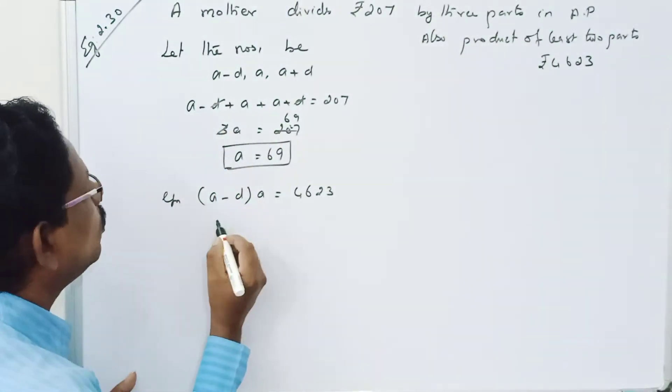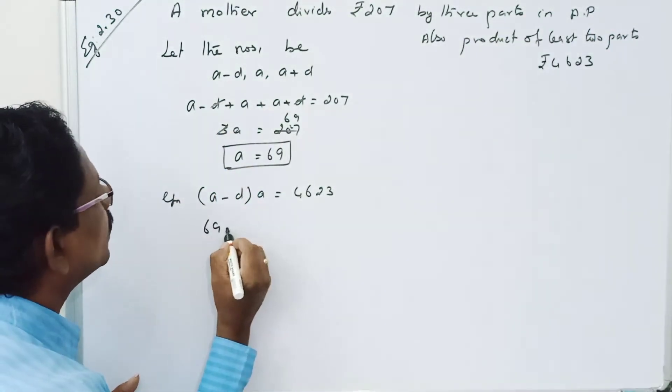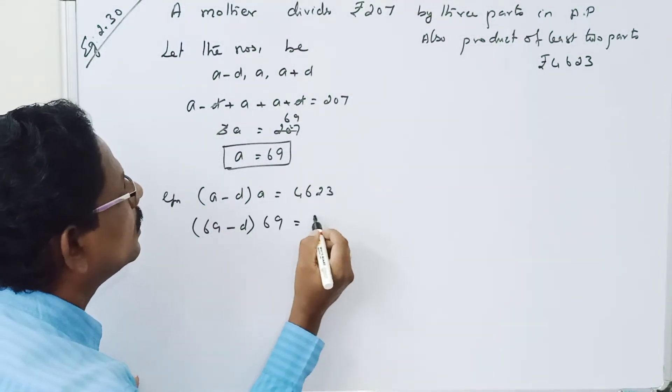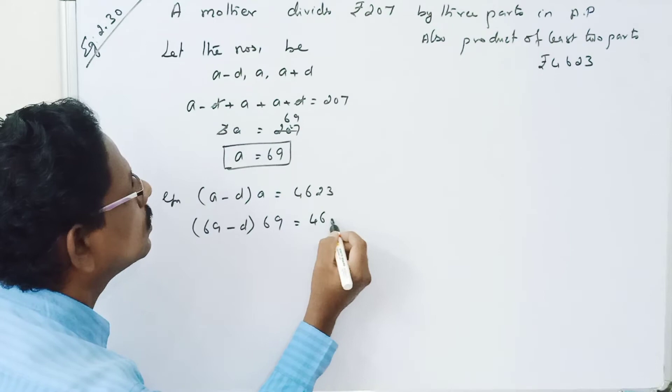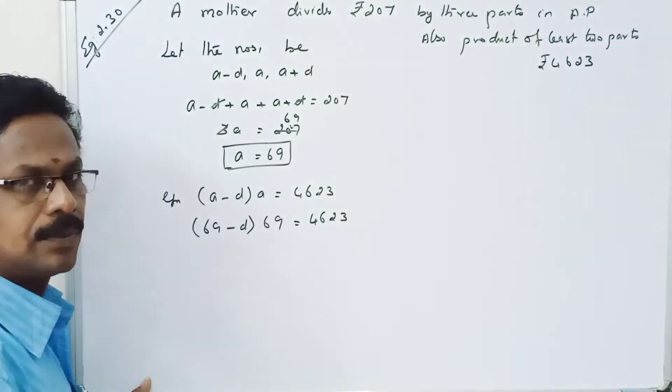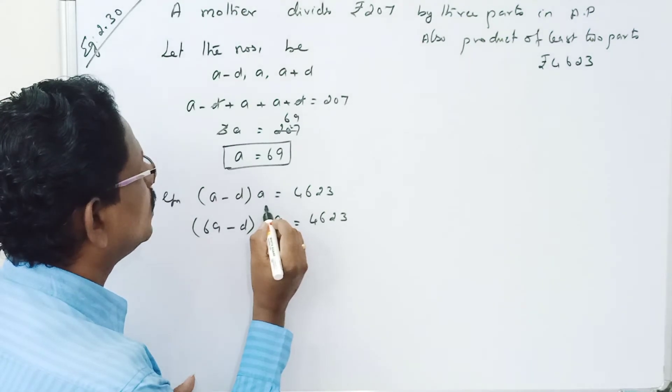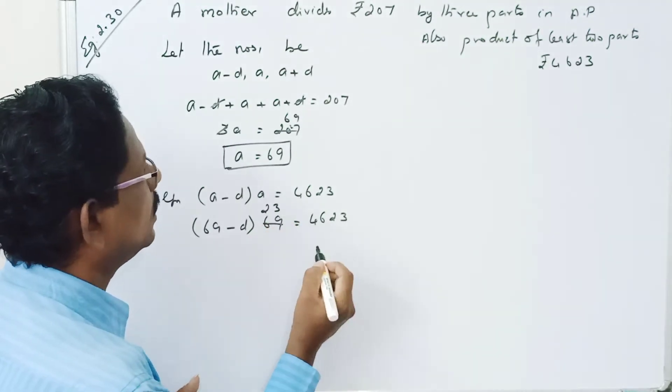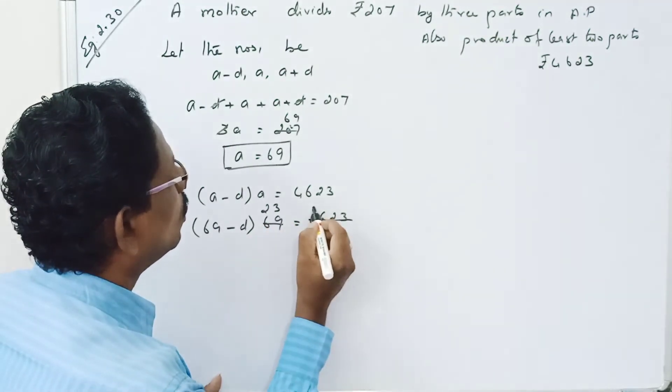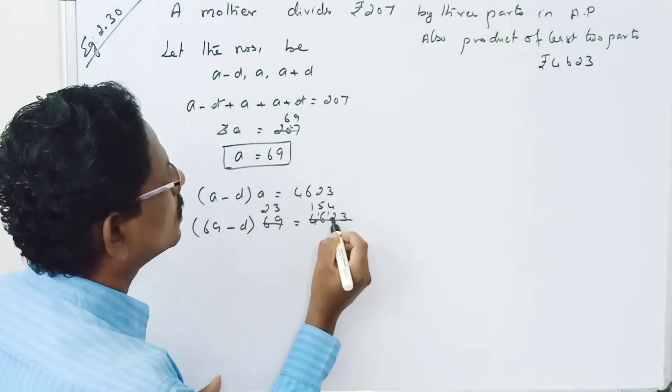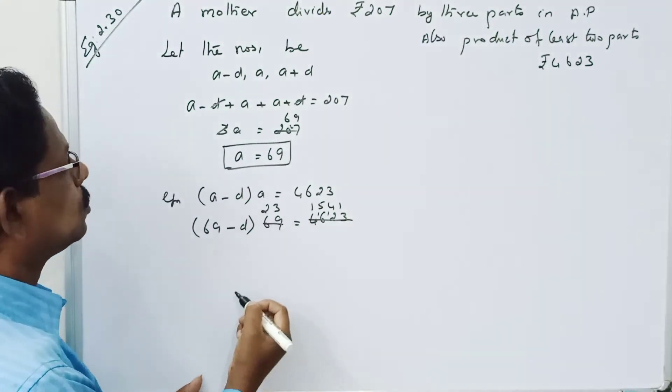69 minus d times 69 equals 4623. We can factor this. 3 times 3 is 9, 3 times 5 is 15, 3 times 4 is 12. So 69 minus d equals 1541 divided by 23.